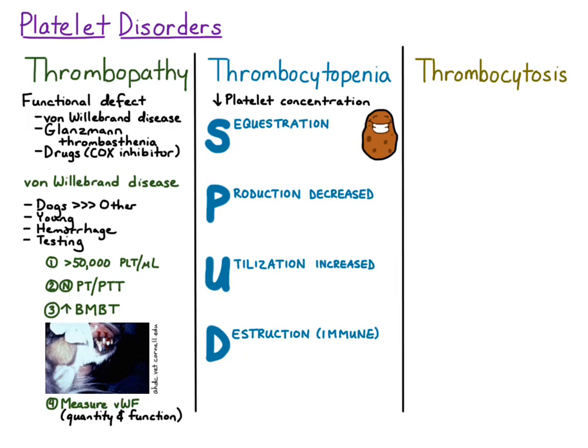Sequestration is a very uncommon to rare cause of thrombocytopenia. It most commonly occurs with hypersplenism and less commonly with hypothermia. With hypersplenism, the spleen is markedly enlarged, so on palpation of the abdomen you would palpate this huge spleen. The platelets actually get sequestered within the spleen, so the platelet concentration throughout the animal is normal — it's just that the platelets are mostly located within the splenic vasculature.